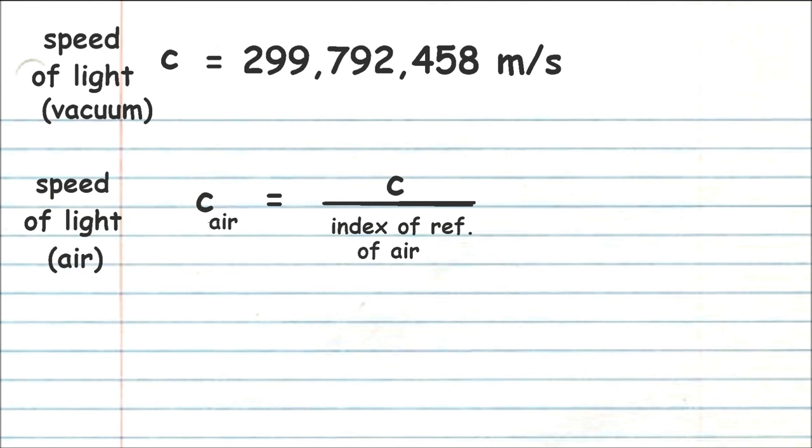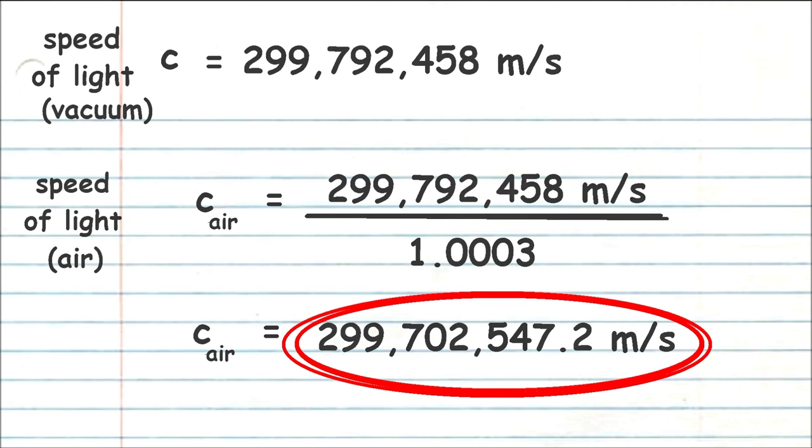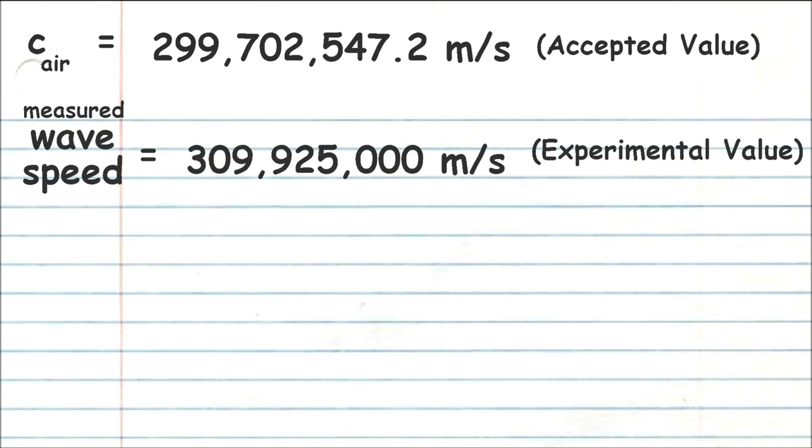When we do this for air, we find that the speed of light through air is slightly slower, 299,702,547.2 meters per second. Now if you're doing this experiment at home with me, then you can use that value too. Provided, of course, your microwave was in air, not underwater. Why did you have a microwave plugged in underwater? Anyway, don't do that. That's dangerous. So that value represents our accepted value of the speed of light through air. And here's the value that I found through my experiment.